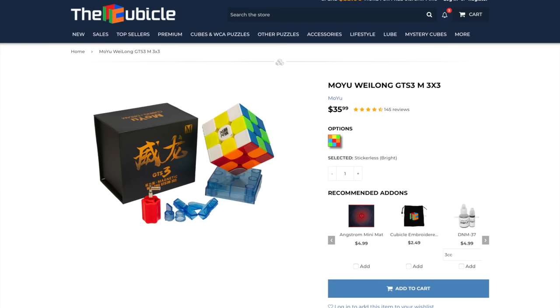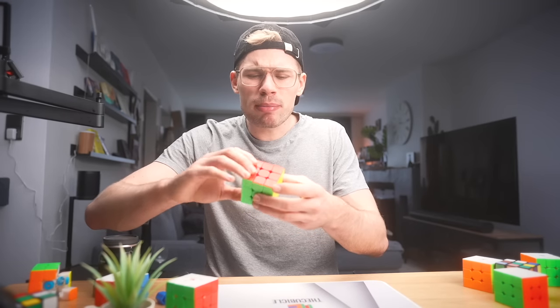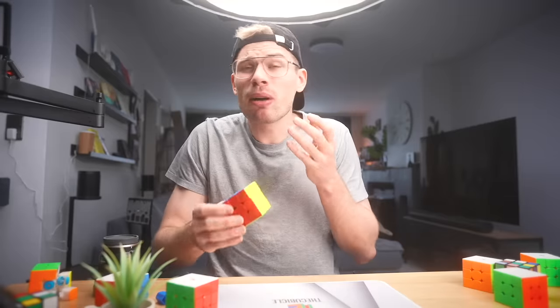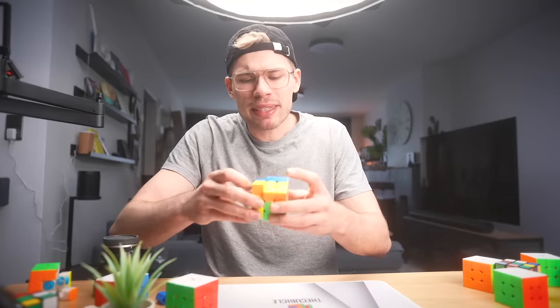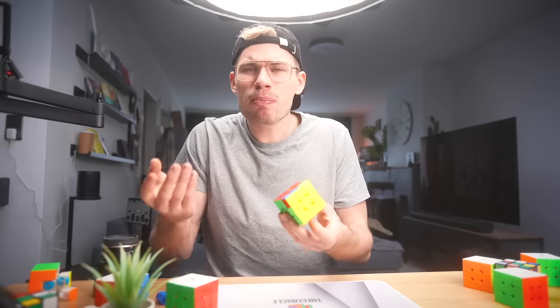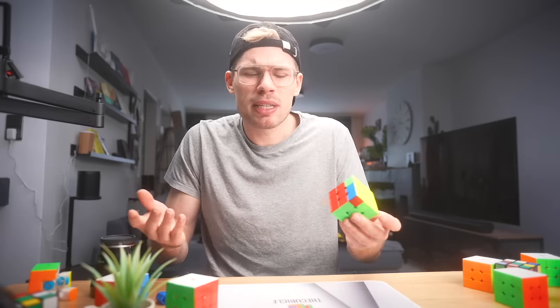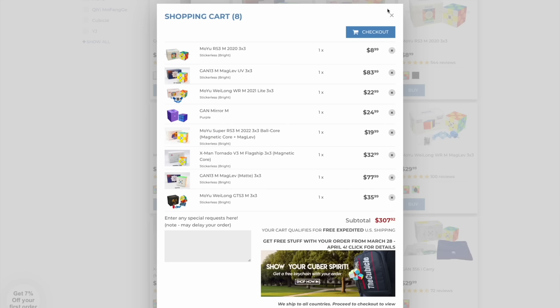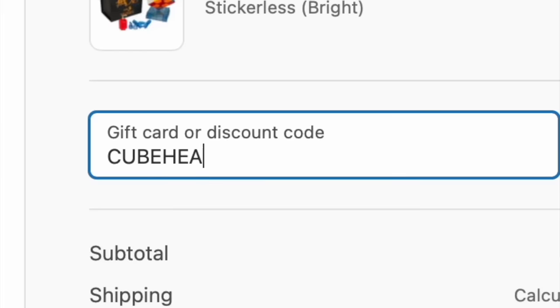Because for example, you buy the new GTS-3M. It is an amazing cube, but the problem is it has very strong magnets. Now, some people really like this. They like the tactile feel of the cube. But some people prefer the lighter pull that you get on other cubes. Now, what do you do? Well, either you just buy multiple cubes and choose whichever is your preference. But alternatively, you have adjustable magnets.